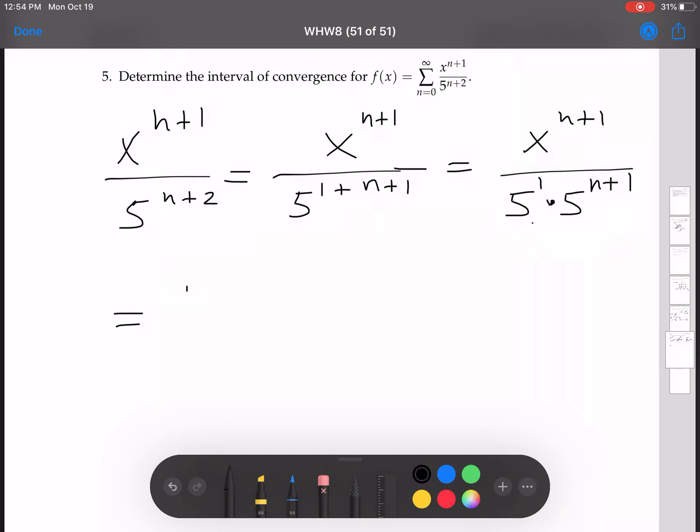All right, so then that's 1/5 times x to the n plus 1 over 5 to the n plus 1, which is 1/5 times x over 5 to the n plus 1.